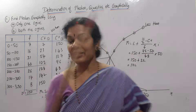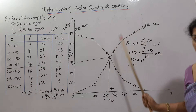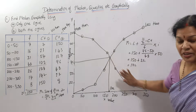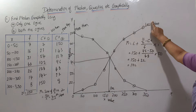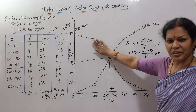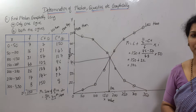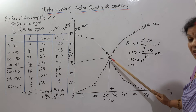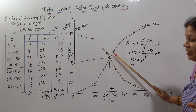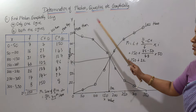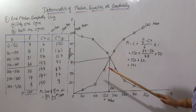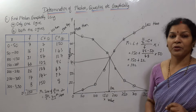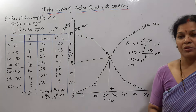Note that with two ogives — less than and more than — the point where they intersect is the median. But if the more than ogive is not drawn, it doesn't matter; using only the less than ogive and locating the 75th item gives the same median value of 172.